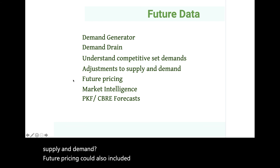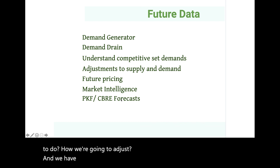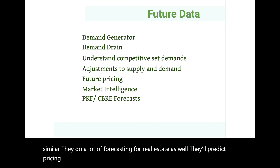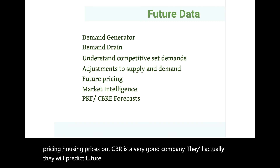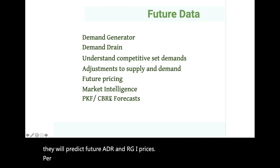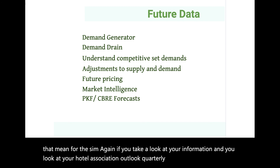Future pricing considerations include inflation — how will we adjust? There are companies that specialize in forecasting, similar to how some forecast real estate prices. CBRE is a very good company that will actually predict future ADR and RGI prices per province — they're a Canadian company. In terms of the sim, if you look at your information tab under the hotel association outlook quarterly reports, that serves the same purpose as a CBRE or PKF forecast report.